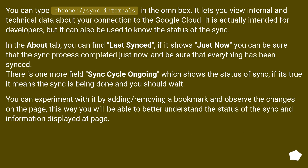You can type chrome://sync-internals in the Omnibox. It lets you view internal and technical data about your connection to the Google Cloud. It is actually intended for developers, but it can also be used to know the status of the sync.